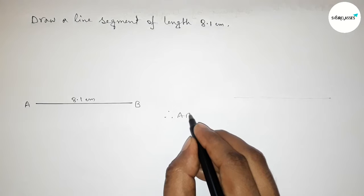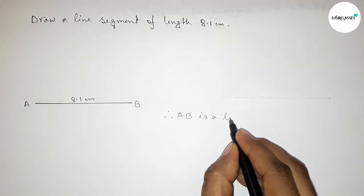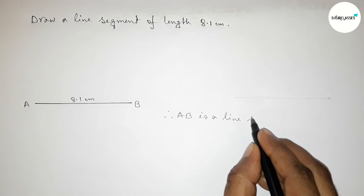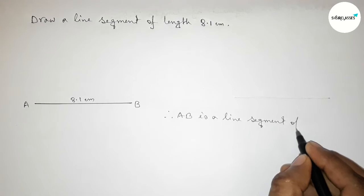Therefore, now we can say that AB is a line segment of length eight point one centimeters, and with the help of scale you can draw this line by this way.